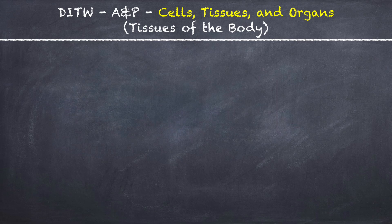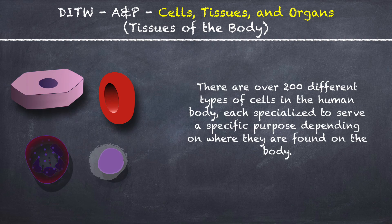This is DITW Anatomy & Physiology and you are watching the video on Tissues of the Body. There are over 200 different types of cells in the human body, each specialized to serve a specific purpose depending on where they are found in the body.